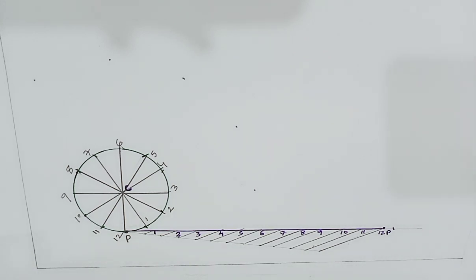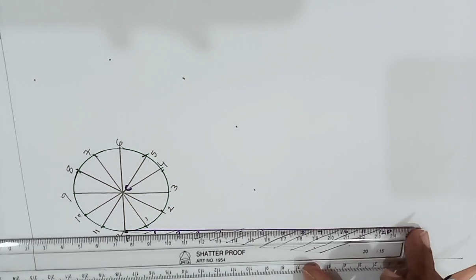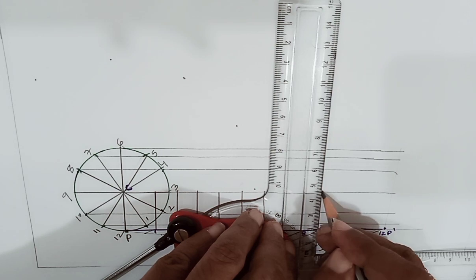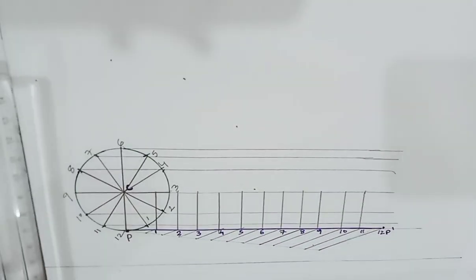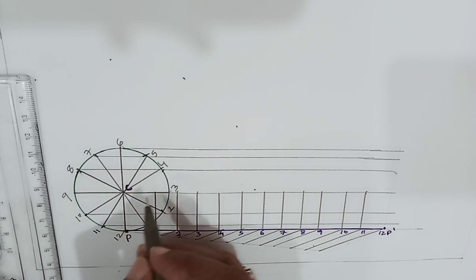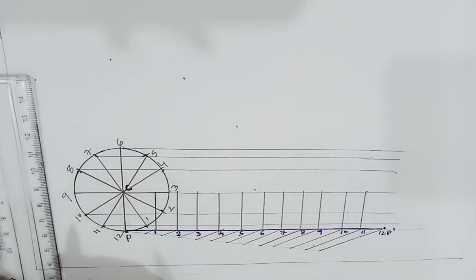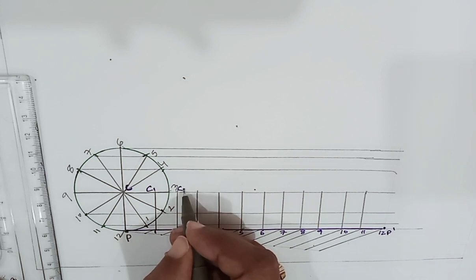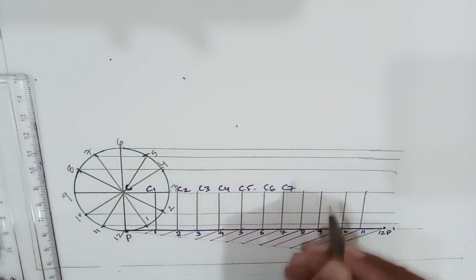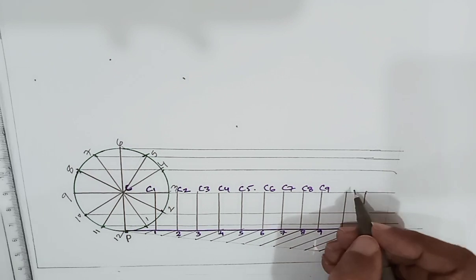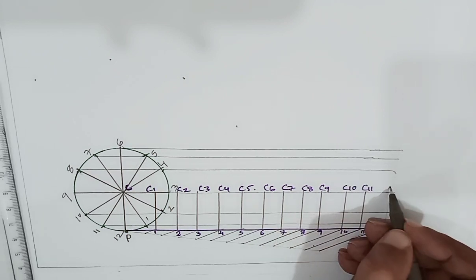After dividing the directing line into 12 parts, draw lines parallel to P–P-dash passing through the different division points on the rolling circle. Then label the intersection points of the perpendiculars with the locus of the path line passing through C as C1, C2, C3, C4, C5, C6, C7, C8, C9, C10, C11, C12.